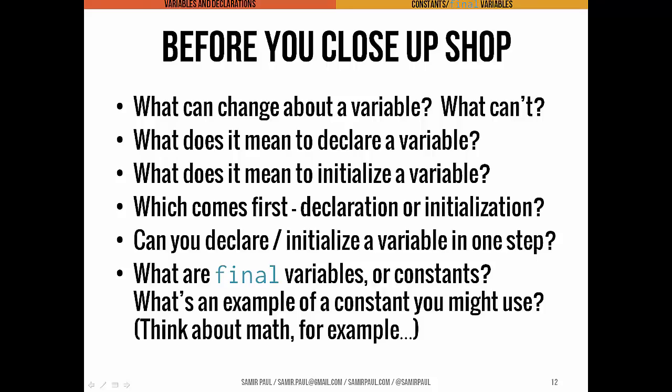Before you close up, make sure you know: what can we change about a variable and what can't we change? What does it mean to declare and initialize a variable? What comes first — declaring or initializing? Can you do it in one step? And what are final variables or constants? Think of a reasonable example of a constant you might use in a program — think back to math class for ideas about constants. If you can come up with some creative examples, that'd be great.